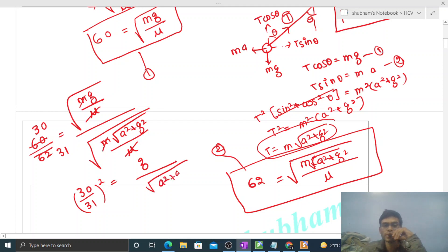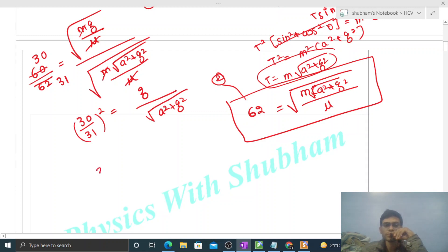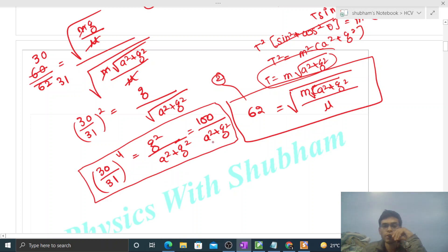So inside root will remain a square plus g square. Let's do one thing, let's take one more square. So it will be 30 by 31 raised to the power 4, that is g square divided by a square plus g square, right? Now g you have to take as 10, so it will be 100 divided by a square plus g square.